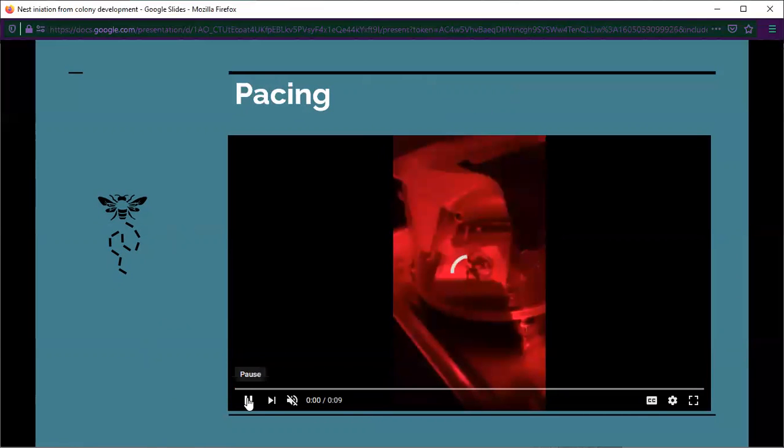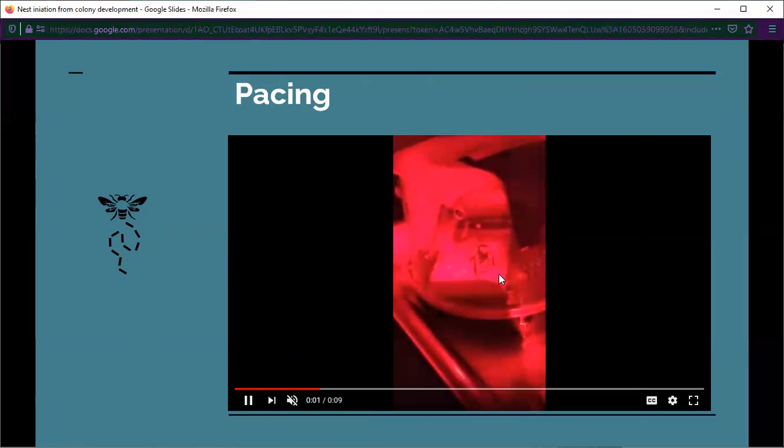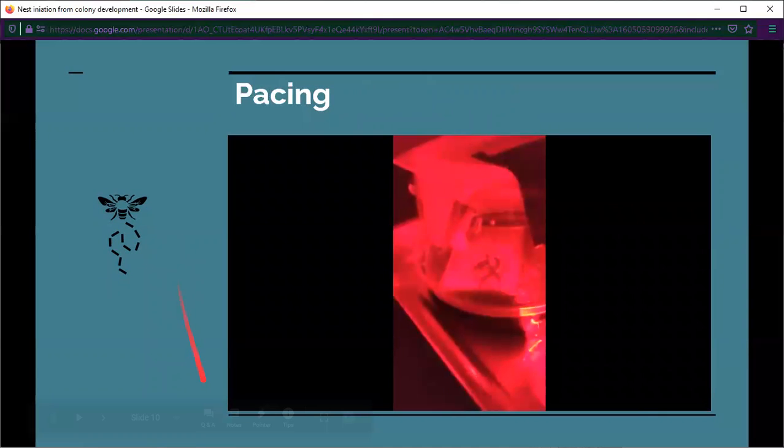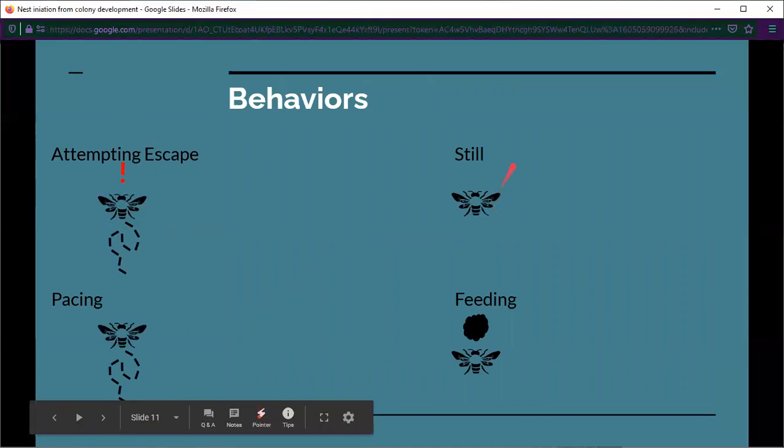Another one is pacing. Here is a huntii queen, and she is just pacing around. She's not trying to escape, but she's certainly moving. The other two behaviors are the still behaviors, which is just sitting there, or the feeding behaviors, which is where they're feeding on pollen or feeding on nectar.